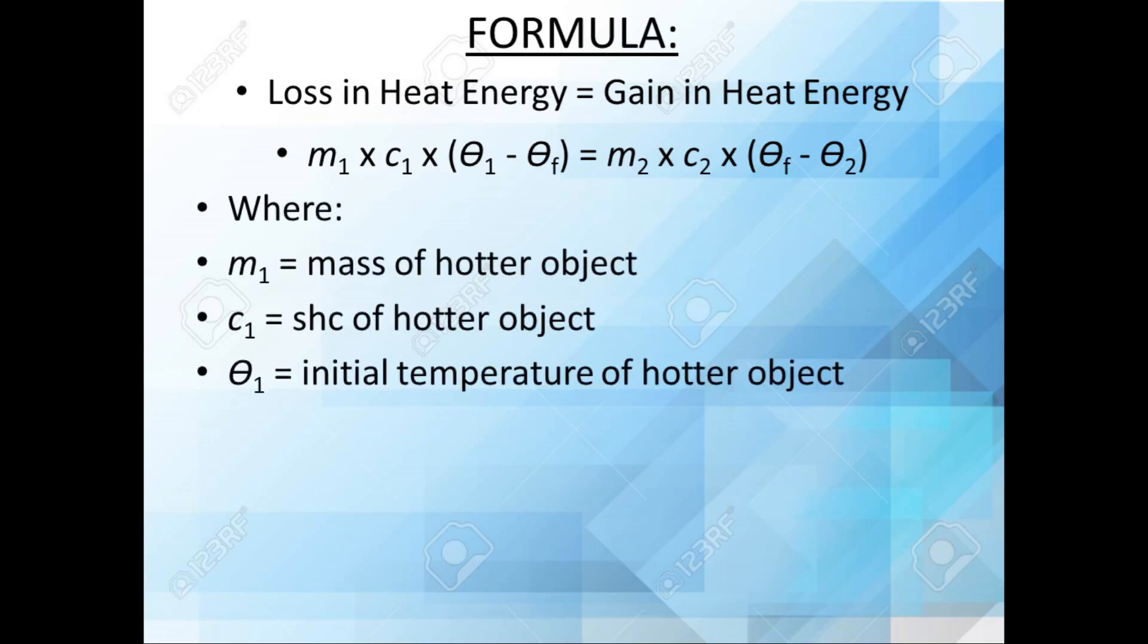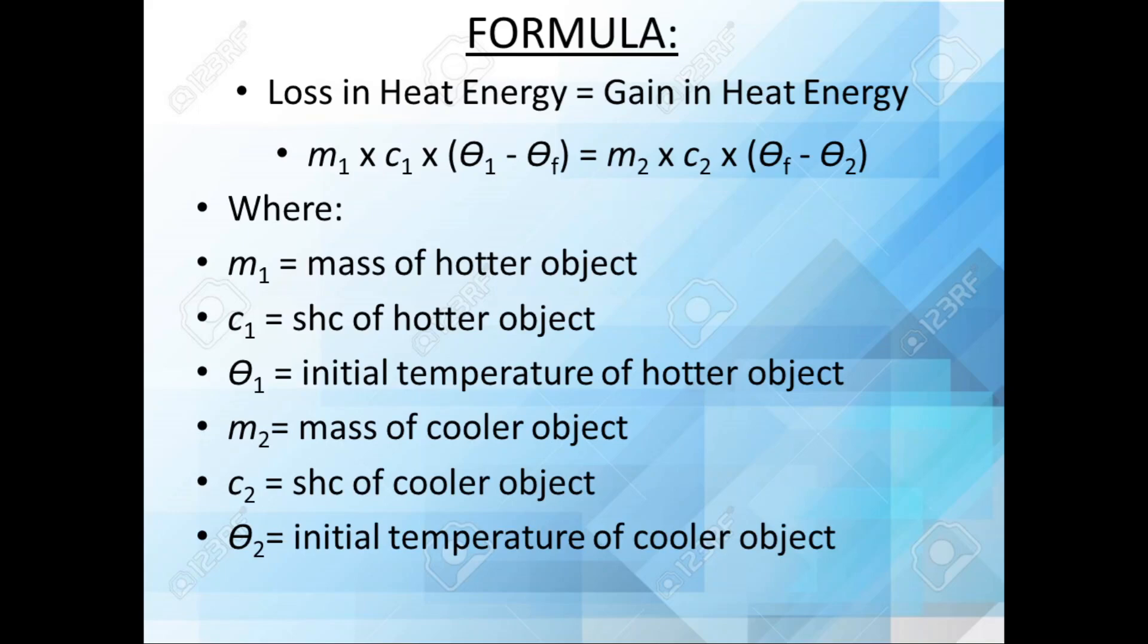Where m₁, c₁, and θ₁ are the mass, specific heat capacity, and initial temperature of the hot object. m₂, c₂, θ₂ are the mass, specific heat capacity, and initial temperature of the cooler object, and θf is the final temperature of the mixture.